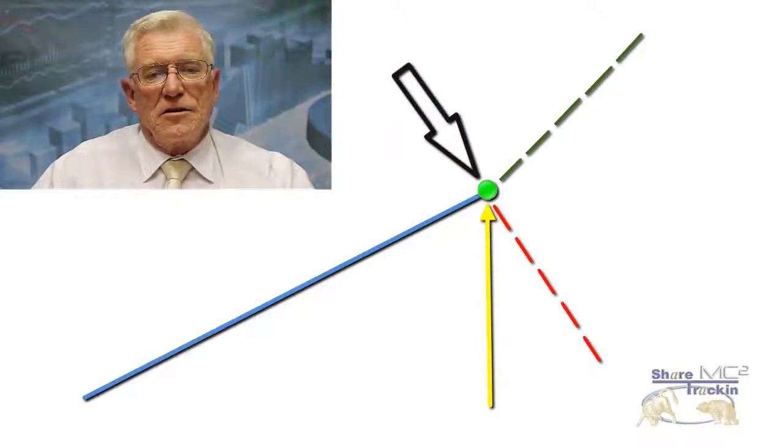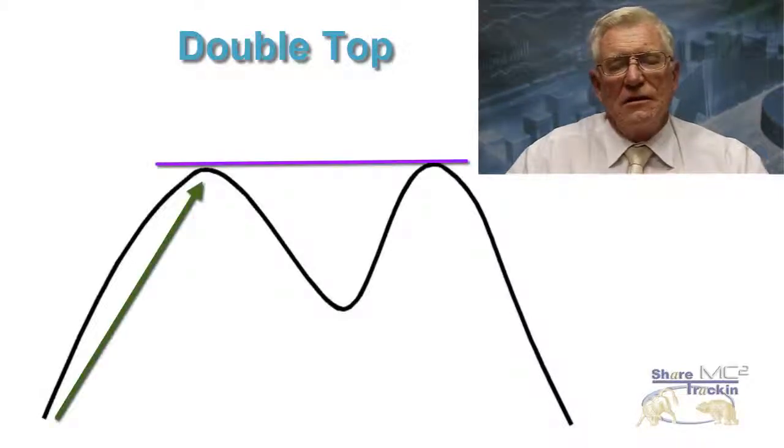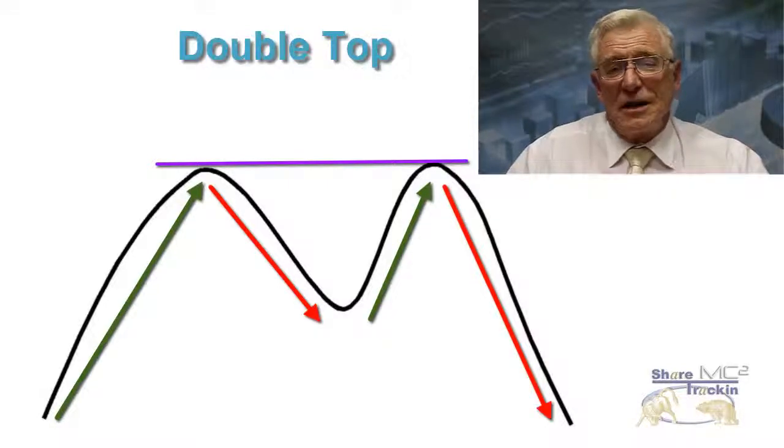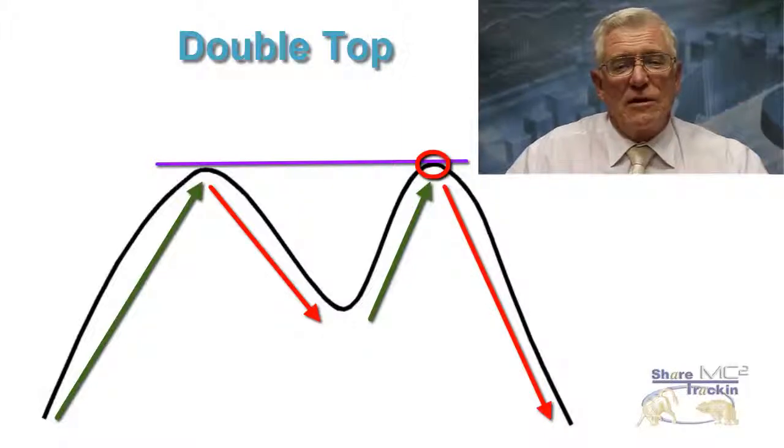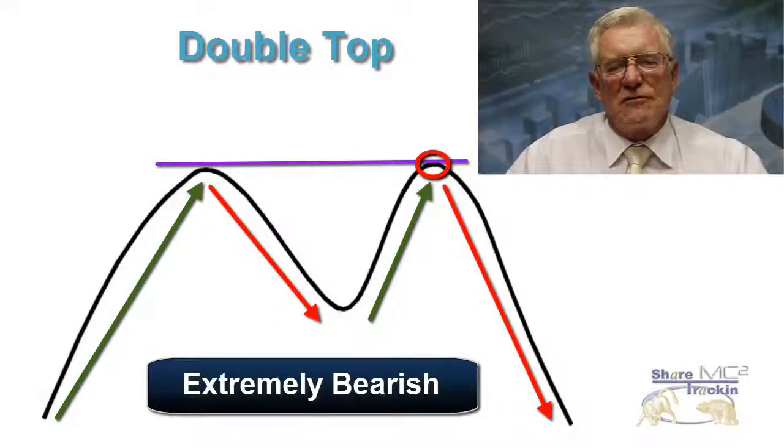Now let us consider a few other formations. Let us start with double tops and double bottoms. With a double top the share price rises to a level and then falls back, before rising back to the same level and falling back again. If it does not penetrate that high then we call that formation a double top, and that is extremely bearish. That means that the market is probably going to fall quite strongly from that point.